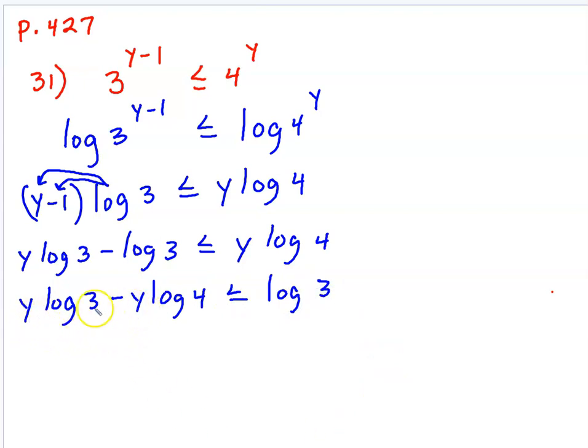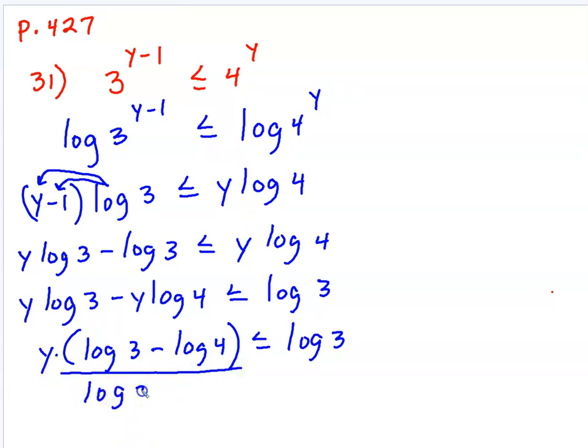And now that my y terms are on the same side, I can factor out the y. And since y is being multiplied here, I can undo multiplication by this parenthesis with division. So the goal is to get y by itself. I'm going to be dividing both sides of this inequality by log 3 minus log 4. And I wanted to do it this way on purpose because I just want to give you a heads up about problems like this when inequalities are involved.